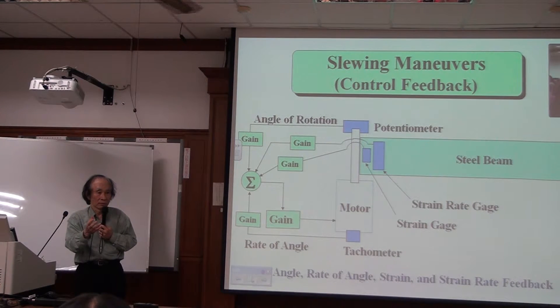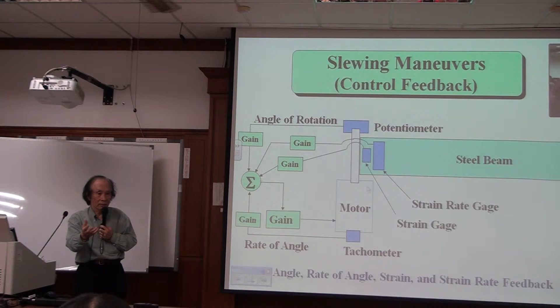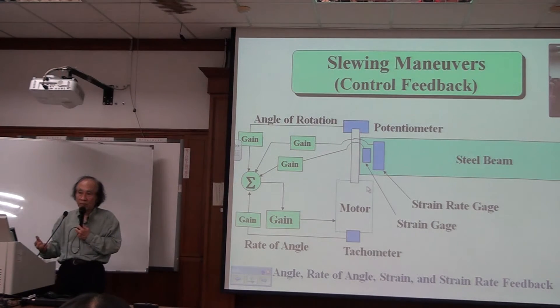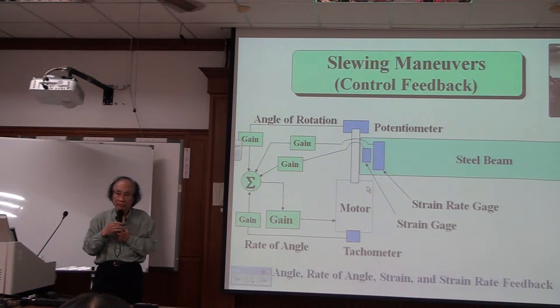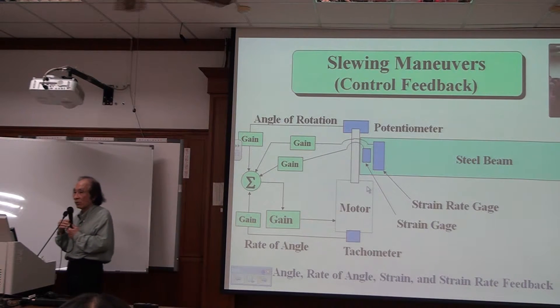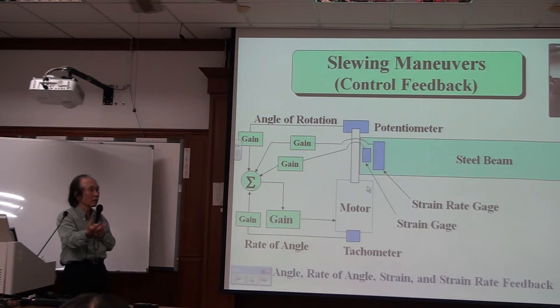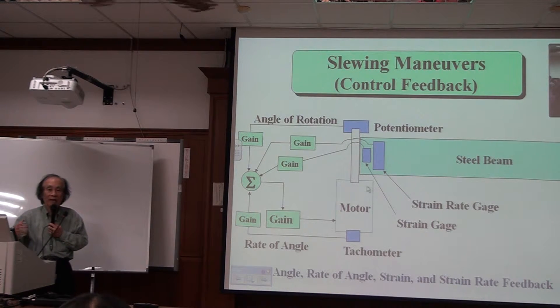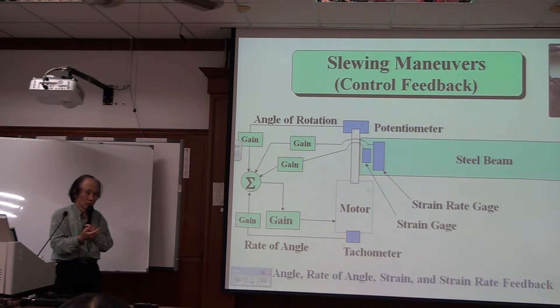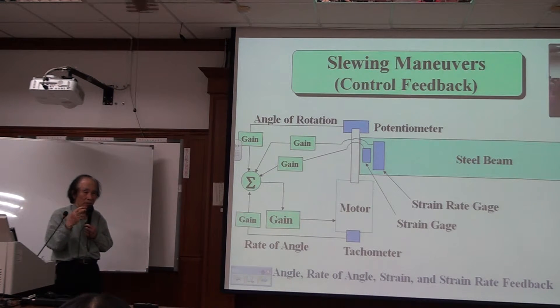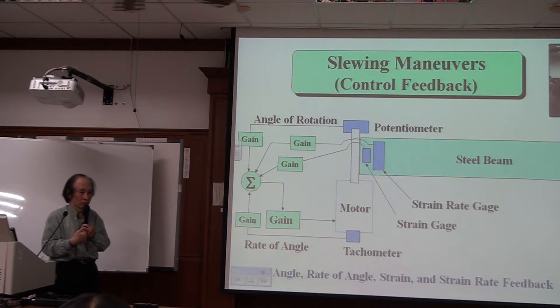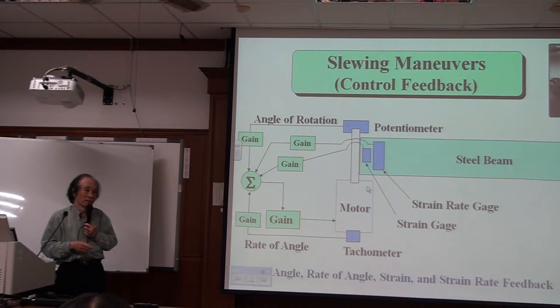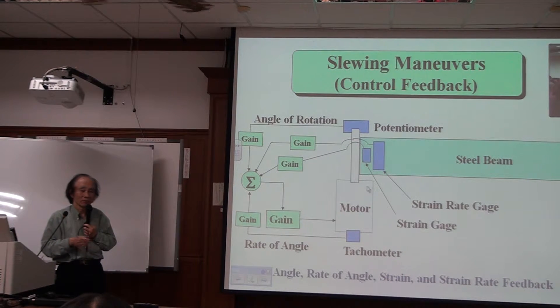How much per gain? Is it one, two, three, 0.5, 0.3, -0.1, -0.5—all kinds of different values. How can you calculate those values so that I can drive the motor so the beam will move as I wish? That's the control design. That's what we call control design.